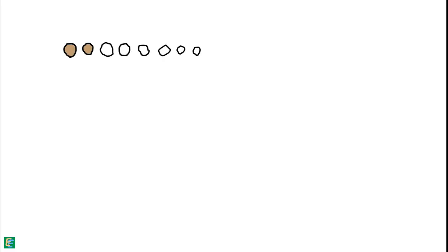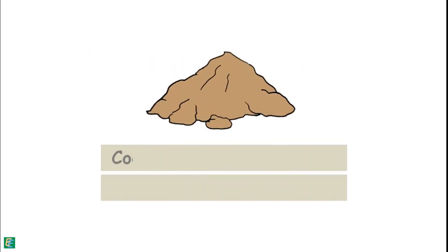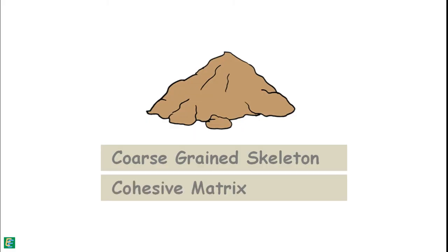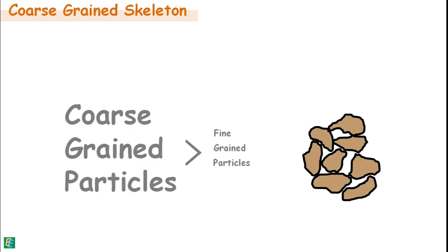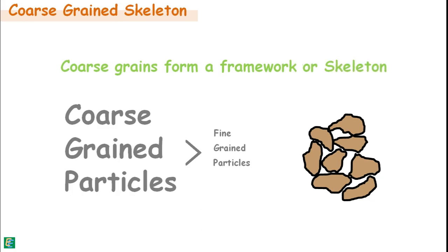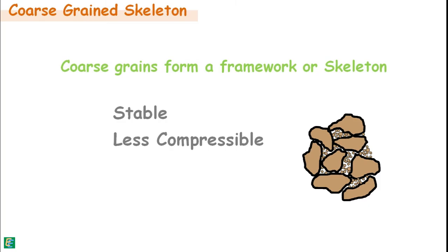When both coarse-grained and fine-grained particles are present in the soil, they make up two kinds of soil structure: coarse-grained skeleton and cohesive matrix structure. In coarse-grained skeleton, coarse-grained particles are present in larger amounts than fine-grained particles, and coarse particles remain in direct contact with other coarse particles, forming a framework or skeleton. The space between these large grains is occupied by fine particles. These soils are stable and less compressible, and can take heavy loads without much deformation.